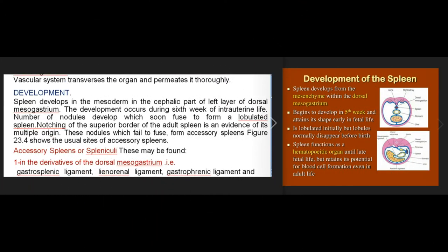The vascular system traverses and permeates the organ thoroughly. Development: the spleen develops in the mesoderm in the cephalic part of the left layer of the dorsal mesogastrium during the sixth week of intrauterine life. A number of nodules develop which soon fuse to form a lobulated spleen. The notching of the superior border of the adult spleen is evidence of its multiple origin.